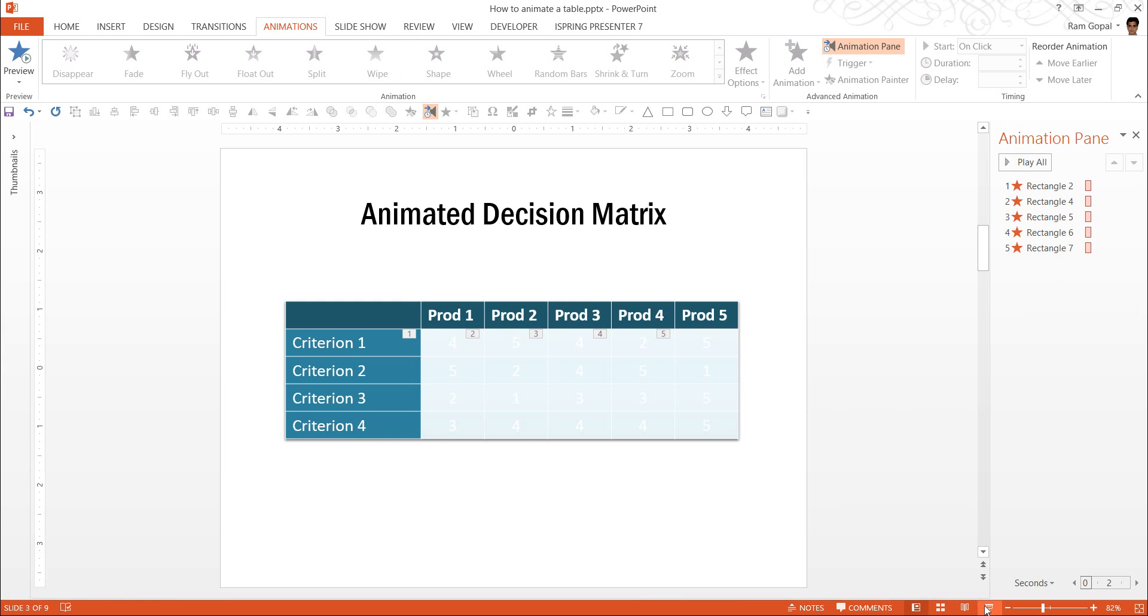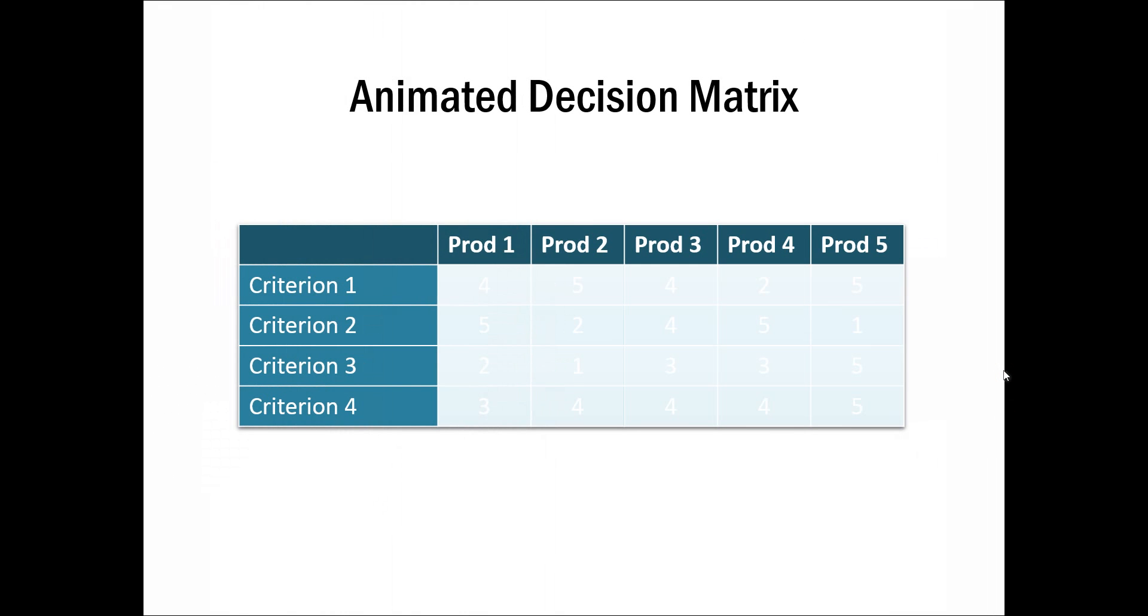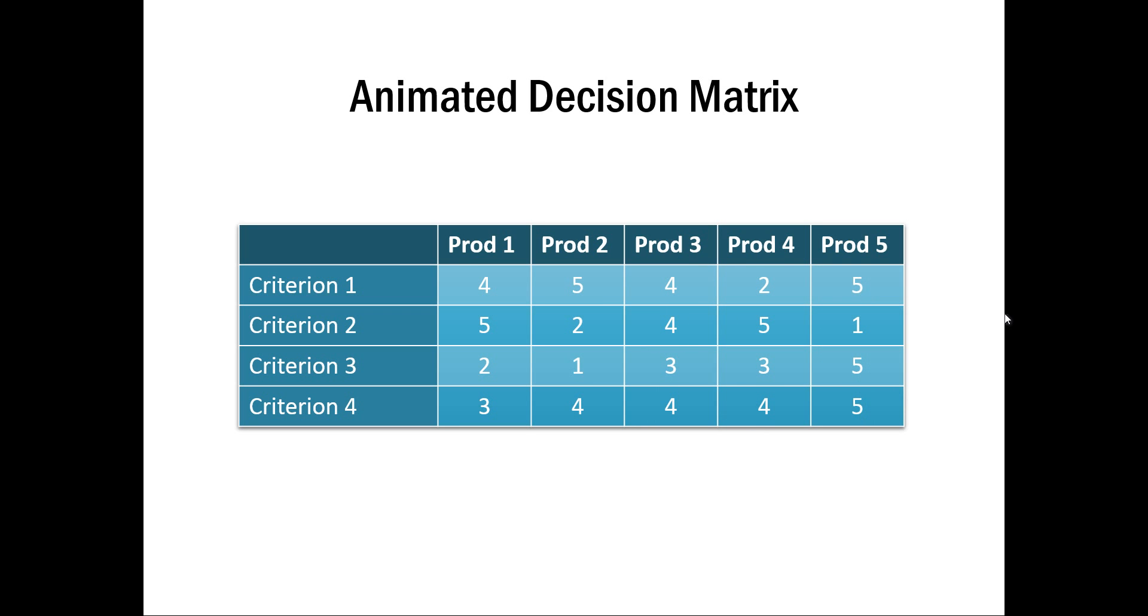So now when I go to the slide show view, you can see here 1, 2, 3, 4 and 5 revealing in the animated decision matrix.